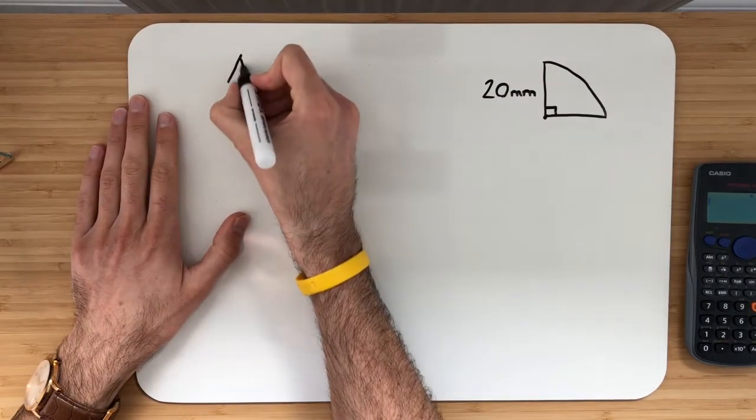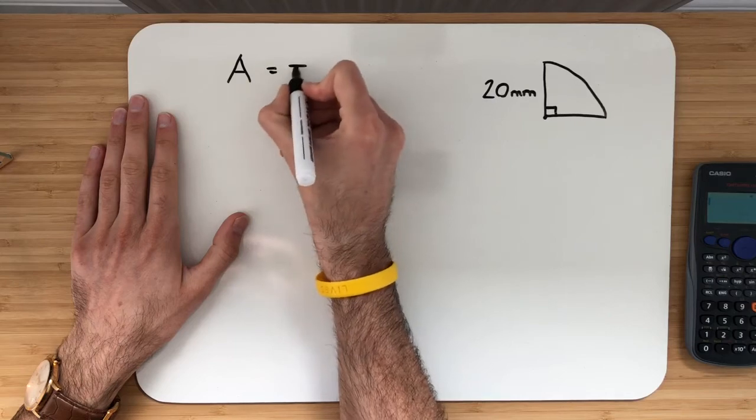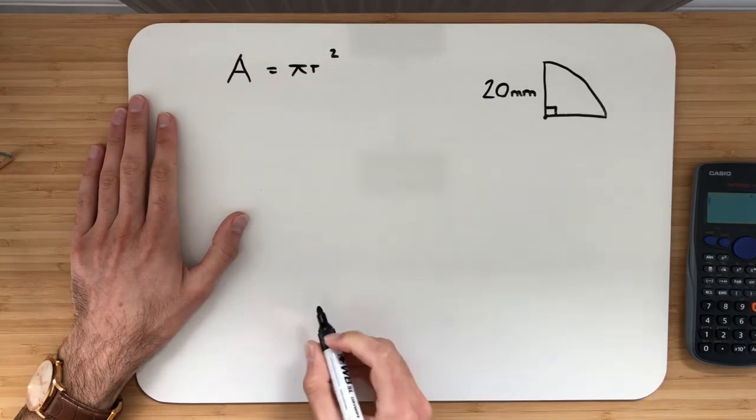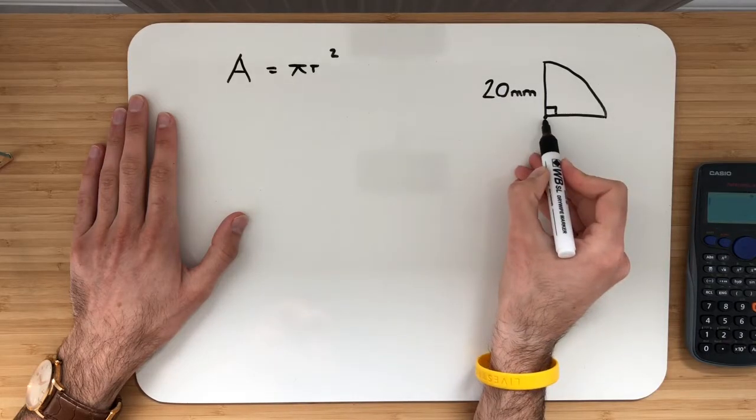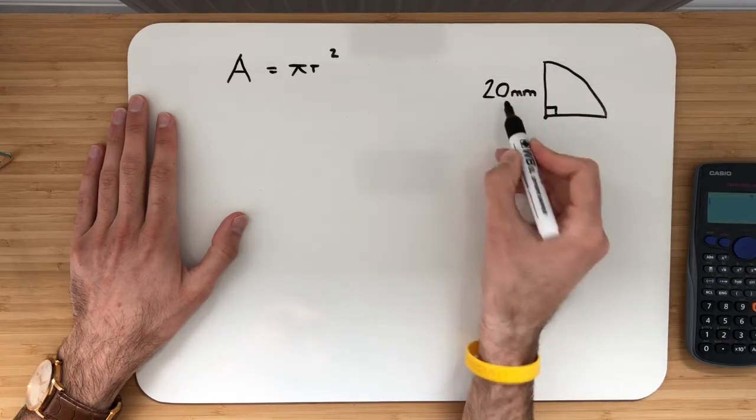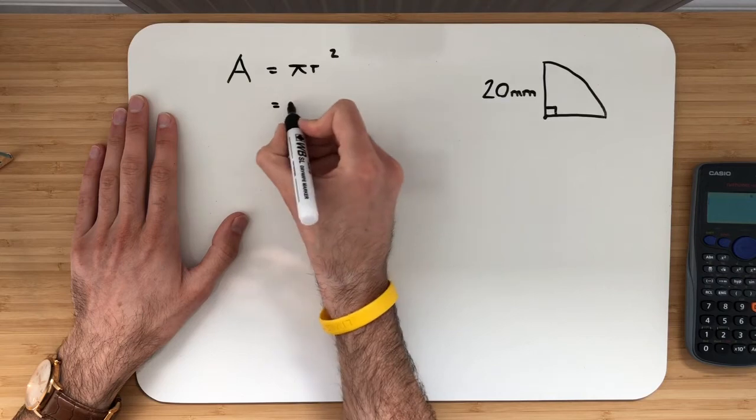So as normal we've got capital A is equal to pi r squared. We know that r stands for radius. A radius goes from the centre of the circle to the edge of a circle which we've been given here. So let's substitute that in.